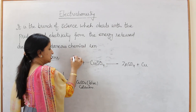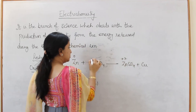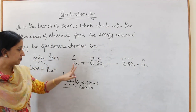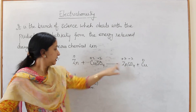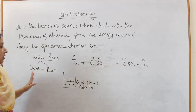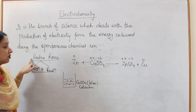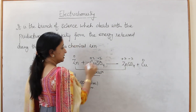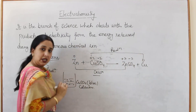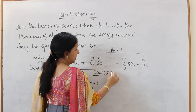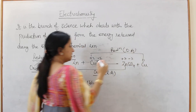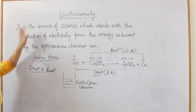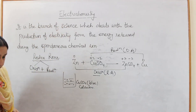In this example, zinc has oxidation state 0 and goes to +2, so zinc undergoes oxidation. Copper goes from +2 to 0, so copper undergoes reduction. Oxidation plus reduction together is a redox reaction. The substance undergoing oxidation acts as the reducing agent, and the one undergoing reduction acts as the oxidizing agent. These reactions form the basis of electrochemistry.